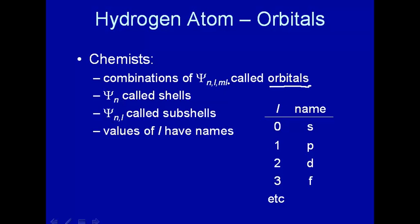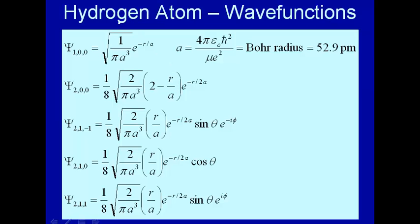We've connected a solution to the Schrödinger equation with the orbitals discussed in introductory chemistry. However, as mentioned, it's not a strict one-to-one correspondence between an orbital and a wave function. In some cases we have to take combinations of them. To see what that means, let's look at the hydrogen atom wave functions.